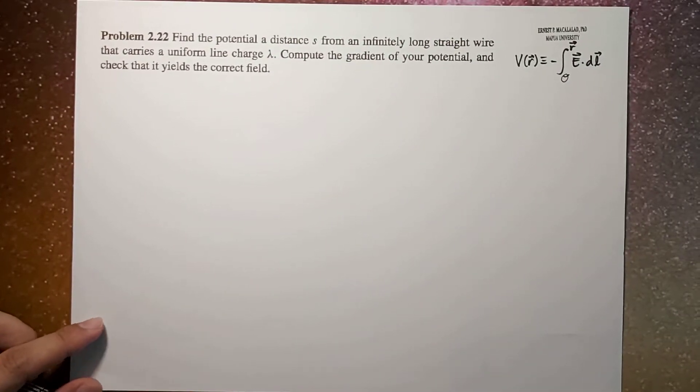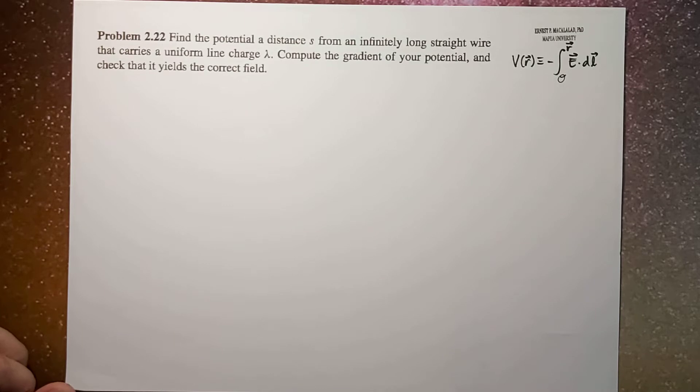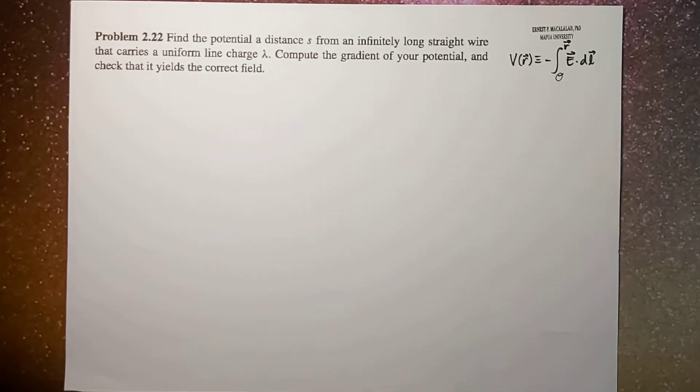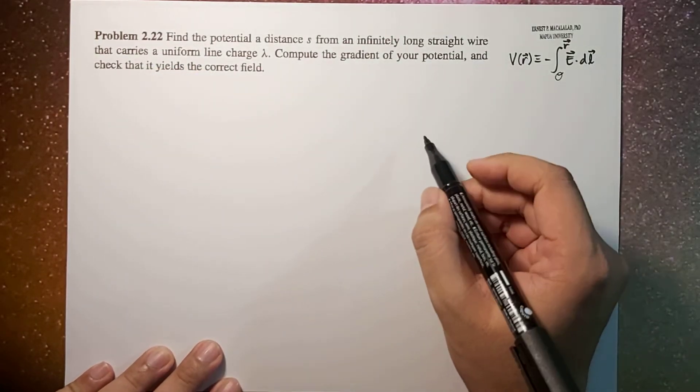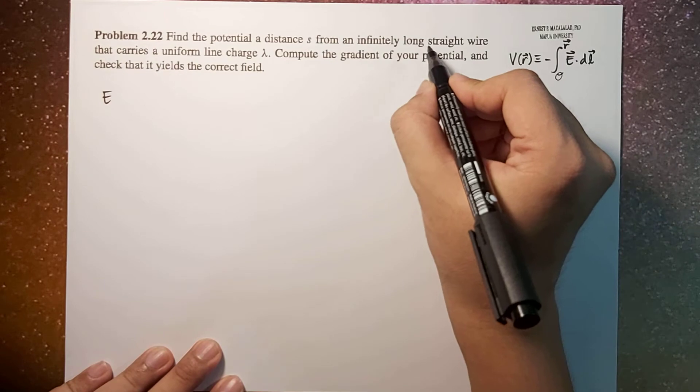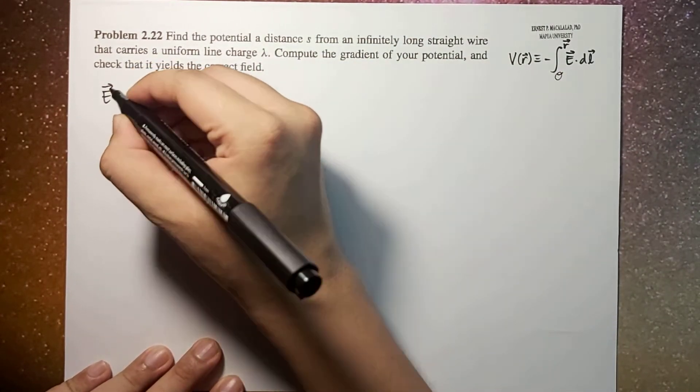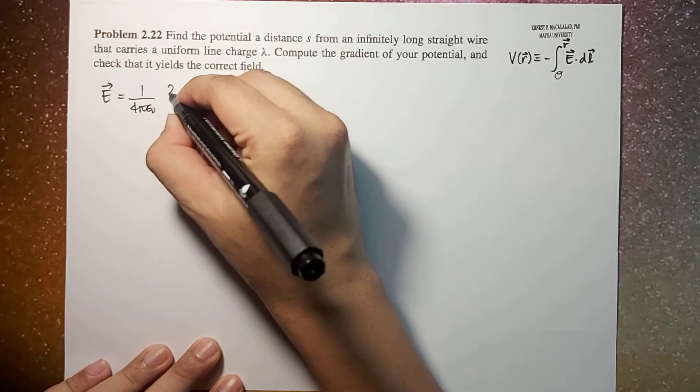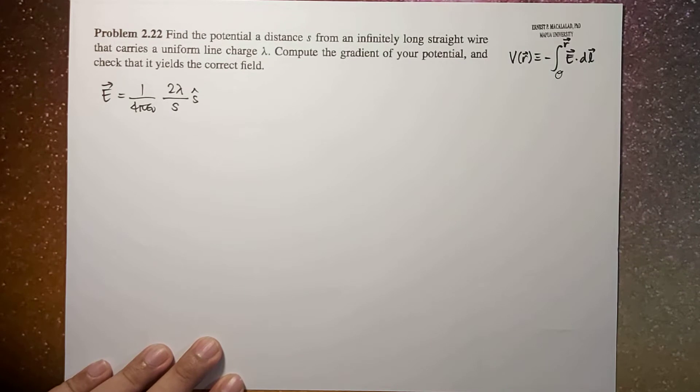When we calculate the potential at a certain point it is important to explicitly set your reference point. Now as you will notice, we already know that from Gauss law the electric field of a uniformly and infinitely long straight wire is given by 1 over 4 pi epsilon naught times 2 lambda divided by s s hat.